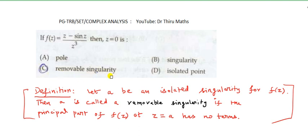The definition of removable singularity: let a be an isolated singularity for f of z. Then a is called a removable singularity if the principal part of f of z at z equal to a has no terms.